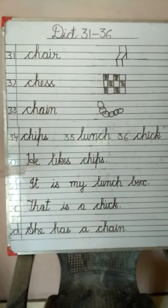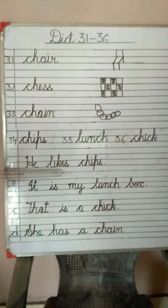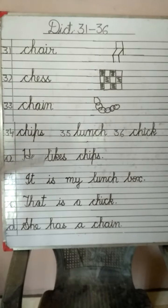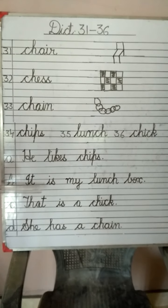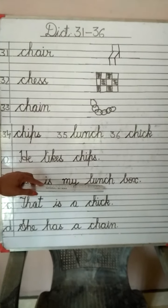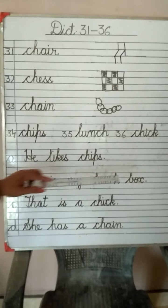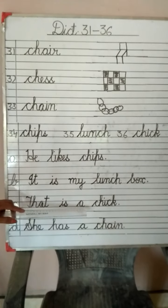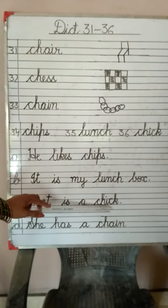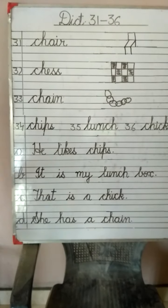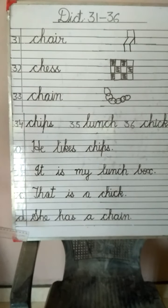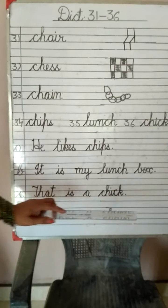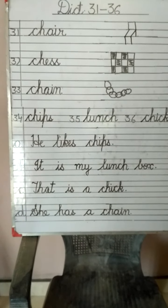Now come to the sentences. He likes chips — L-I-K-E-S, C-H-I-P-S. Usko chips pasand hain. It is my lunch box — L-U-N-C-H, B-O-X. Yeh merah lunch box hain. That is a chick — C-H-I-C-K. That is a chick. She has a chain — C-H-A-I-N. She has a chain. Uske paas chain hain.